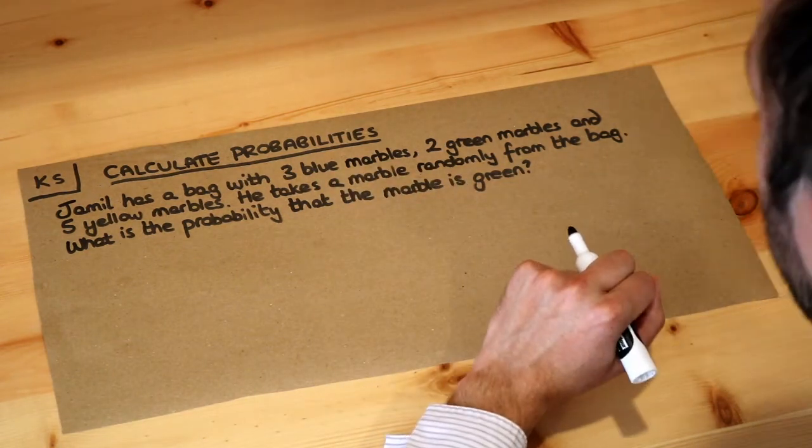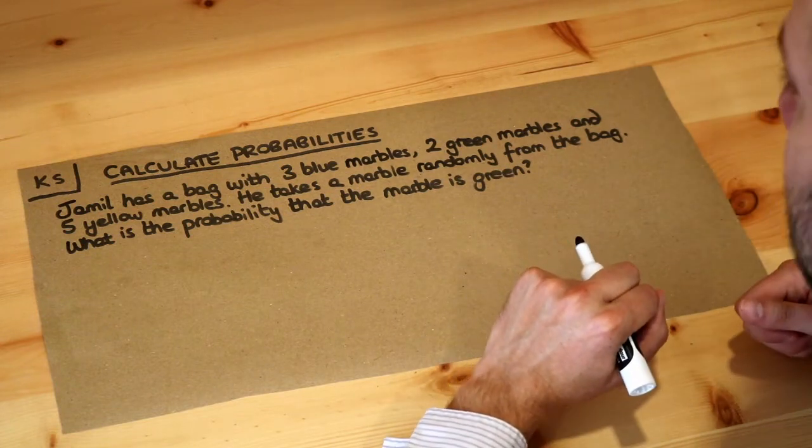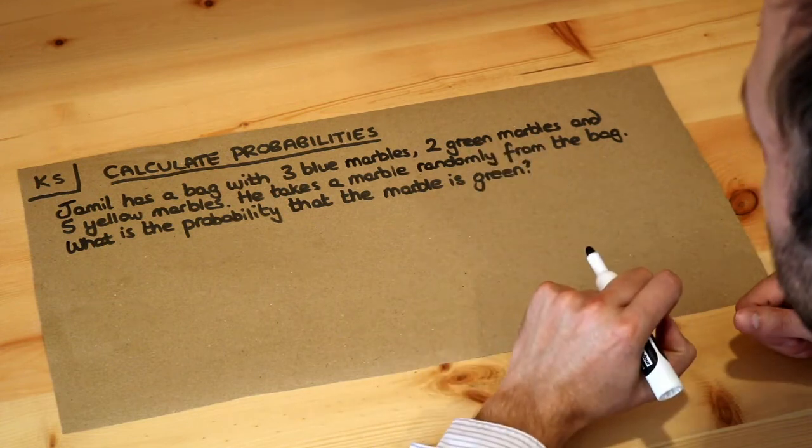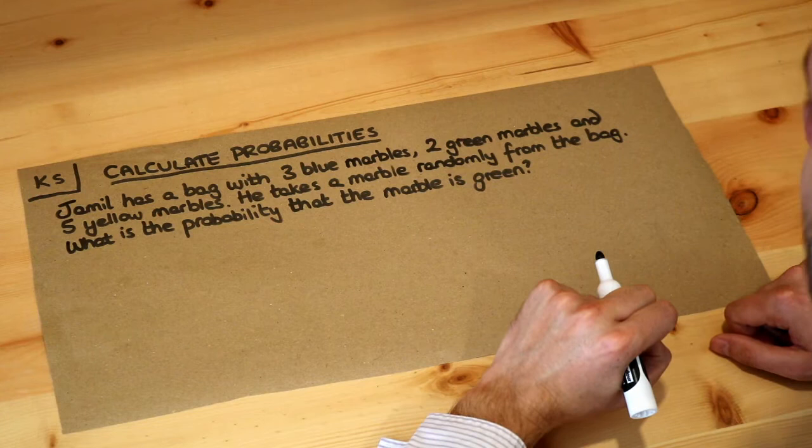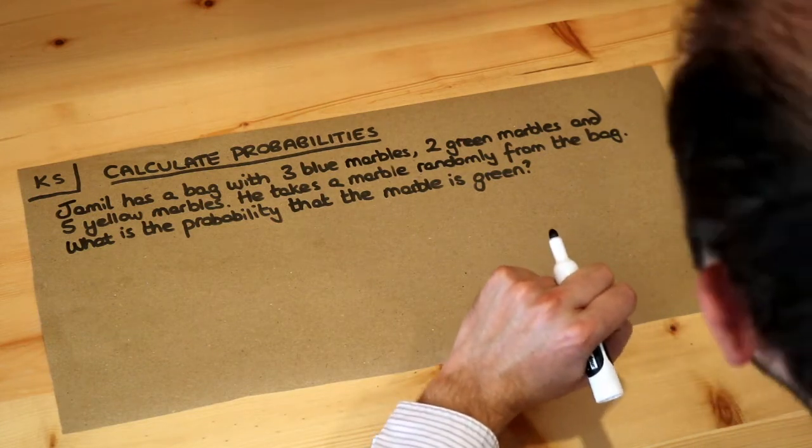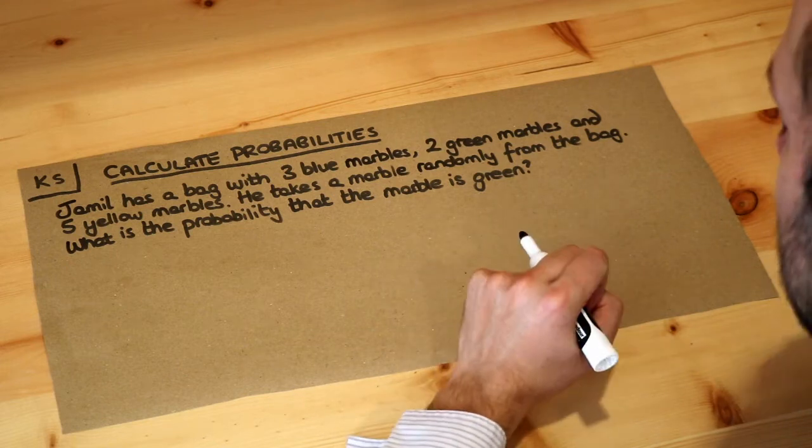For example, if we were to flip a coin, we might be interested in the probability of getting heads. Now if it was a fair coin, so it's just as likely to come down heads as tails, we'd say the probability of getting heads is a half, because if we were to flip the coin lots of times we'd expect to get heads half the time.